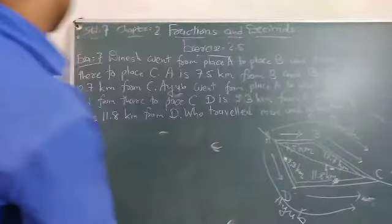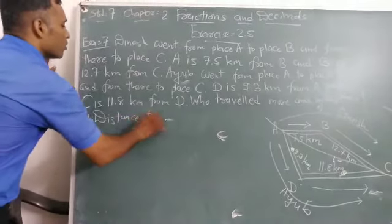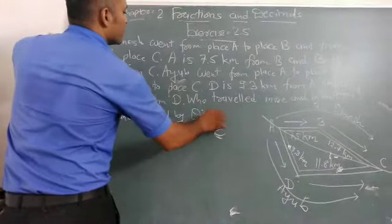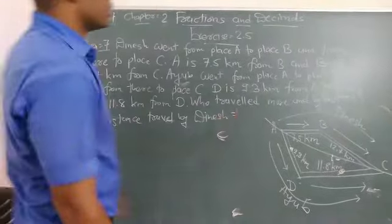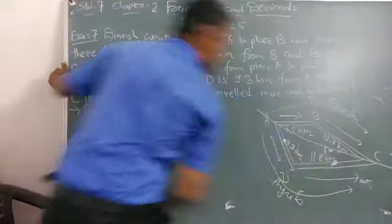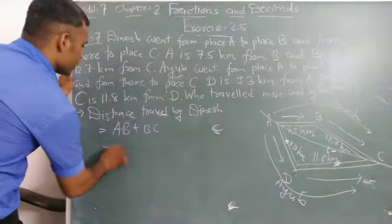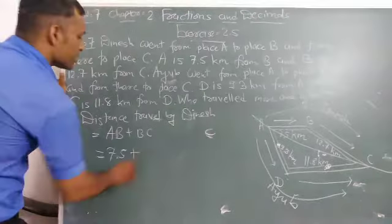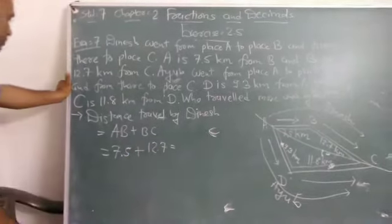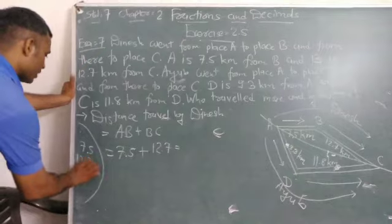First, the distance traveled by Dinesh. We find for Dinesh. Dinesh traveled AB plus BC. AB plus BC. AB means 7.5 km plus BC means 12.7 km.